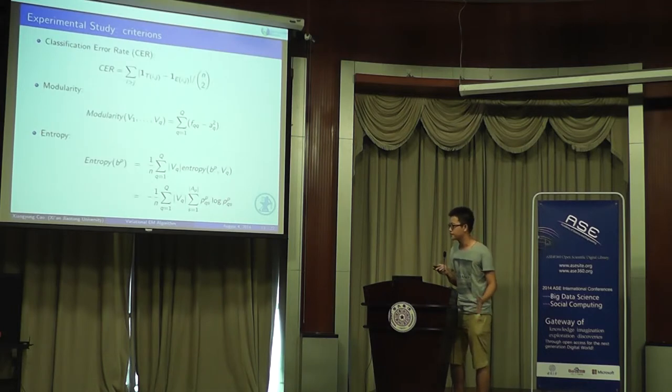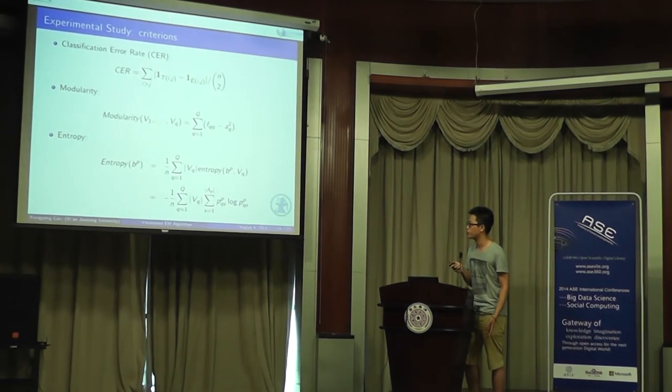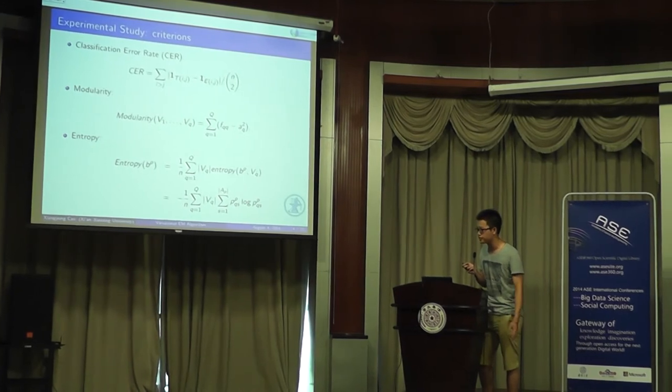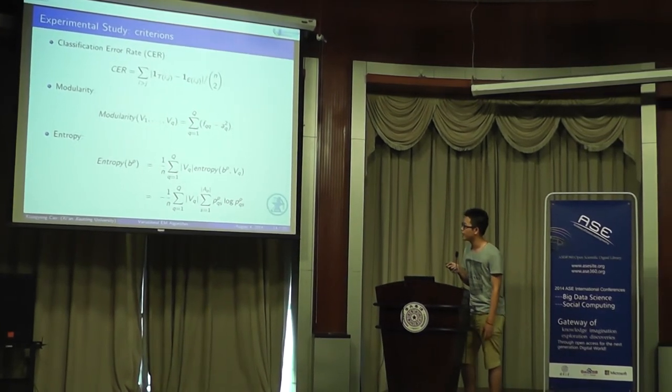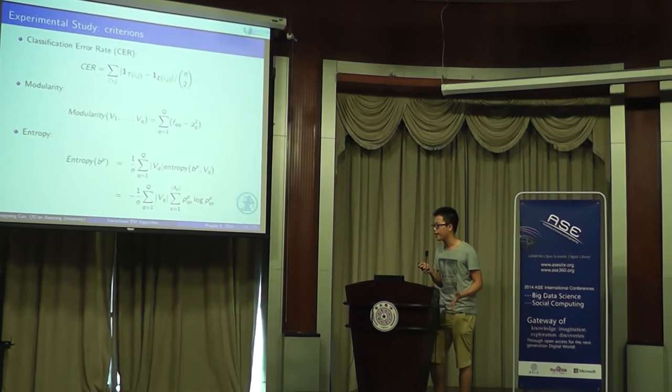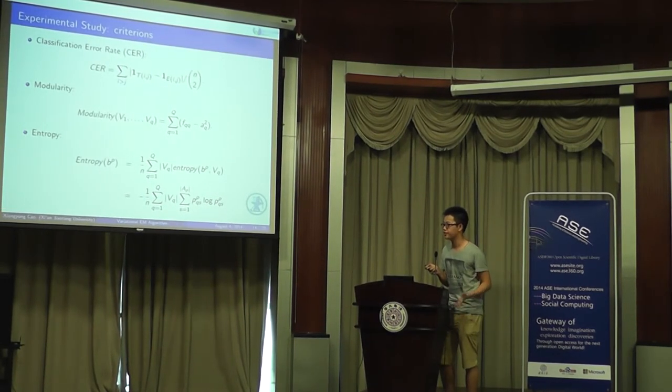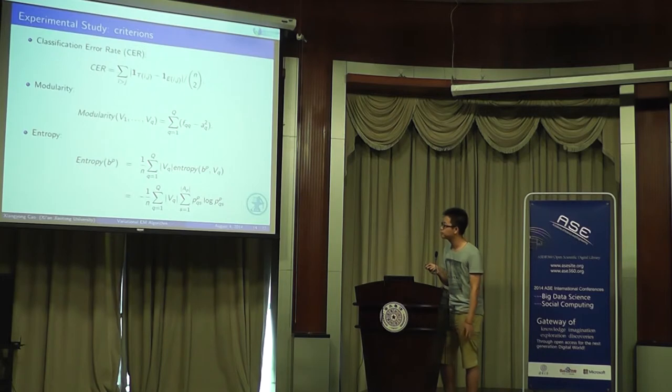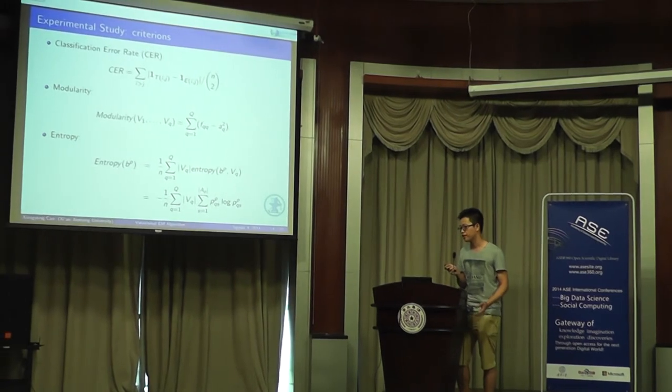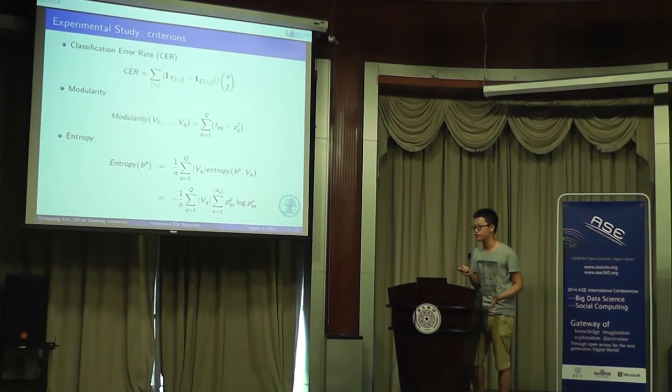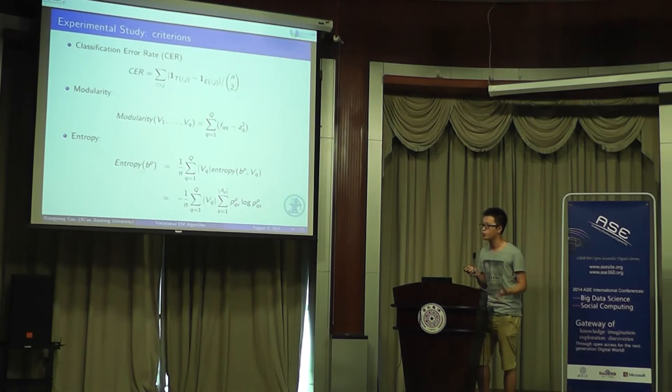To evaluate the performance of both variational BSEM and variational EM, we use three criteria. The first is classification error rate. Next is modularity. Modularity is used to measure the group structure detected by the algorithm. If the modularity is larger than 0.3, it means that the graph has an obvious structure. Next is entropy. Entropy is used to measure the consistency of the attributes within groups.